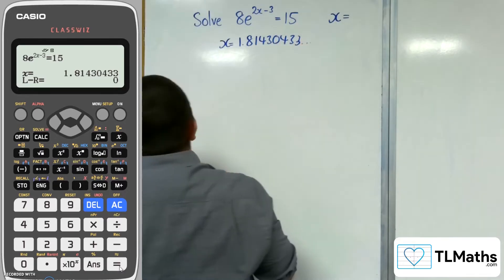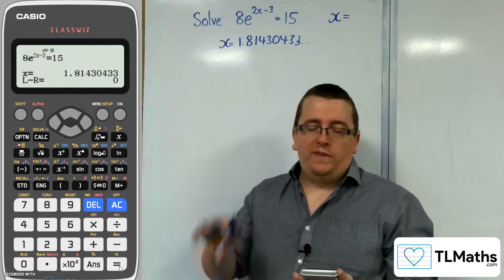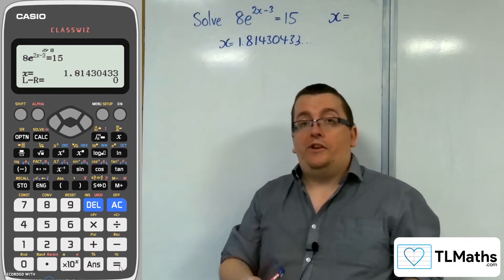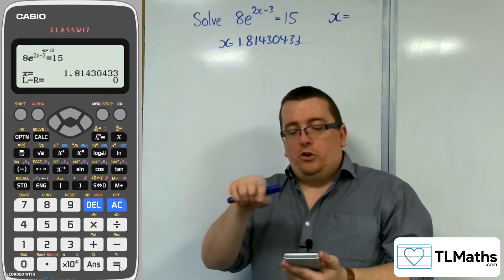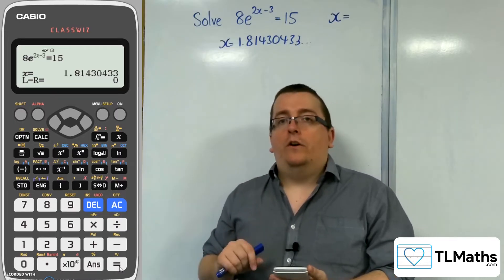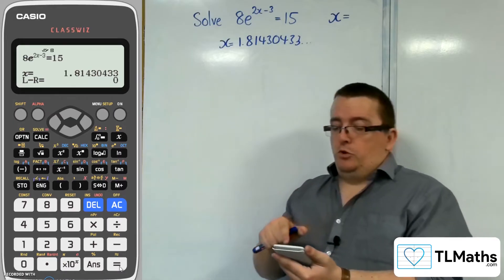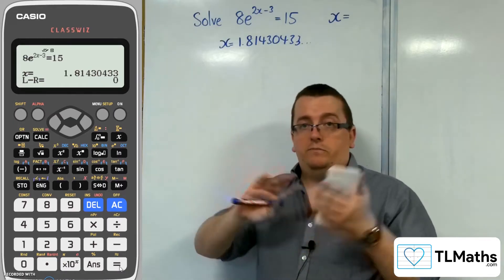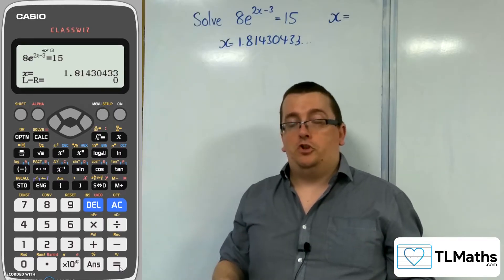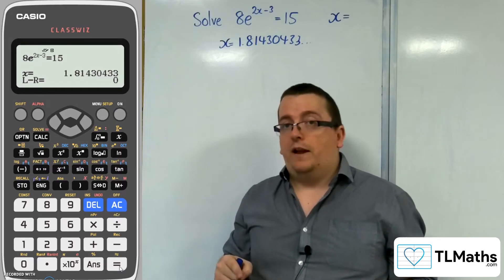Your calculator also tells you the L minus R equals bit at the bottom and says, in my case, 0. Now that's to do with how accurate your answer actually is, whether it's exact or not. Sometimes you'll find the L minus R equals some number that is horrifically large, in which case I wouldn't trust your solution, and then try another starting value.